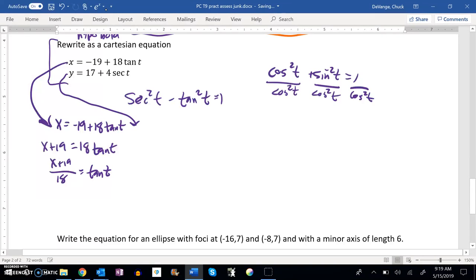For y, I'll solve for secant. Subtract 17, then divide by 4. So secant equals y minus 17 over 4.